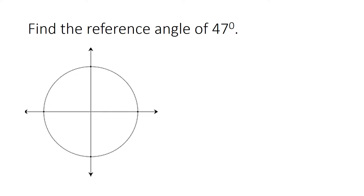For example, we have 47 degrees as an angle. If we draw that on a Cartesian plane, this will be our 47 degrees. Since we want to find the reference angle, notice that 47 degrees is in standard position, connected to the positive x-axis. The reference angle is a positive acute angle formed from the x-axis and the terminal side. So the angle itself and the reference angle are the same. Once your angle is on the first quadrant, the reference angle is equal to the angle itself.